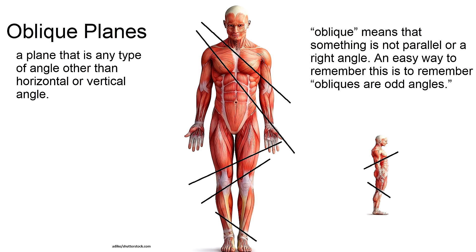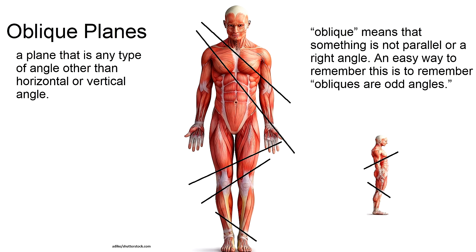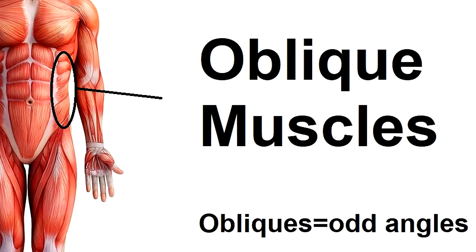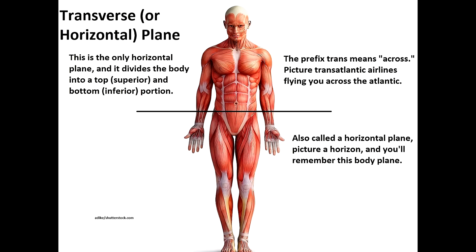Next, we have oblique planes, which are planes that can literally be any type of angle other than a horizontal or vertical angle. In fact, that's what the word oblique means — something that is not parallel or a right angle. An easy way to remember this is the phrase 'obliques are odd.' They're odd angles, and you can also think about your oblique muscles, which come down at an angle and are located laterally to your abdominal muscles.